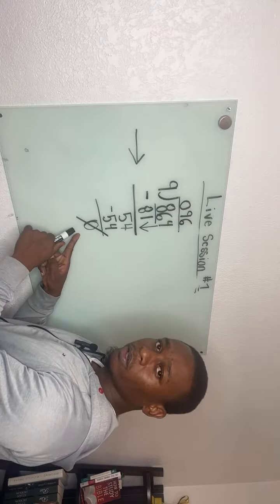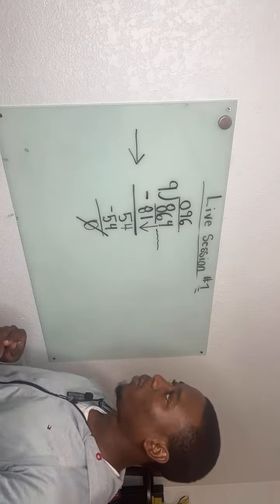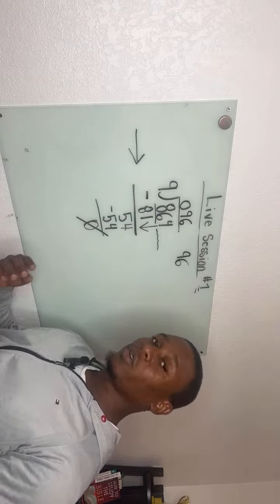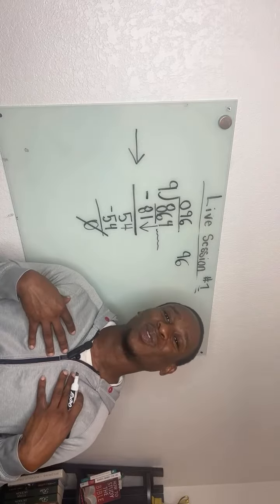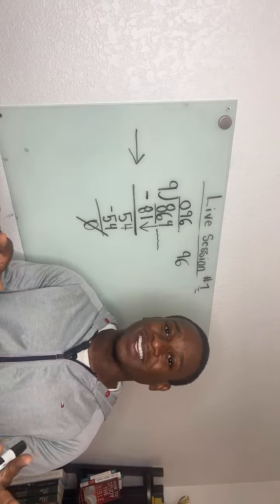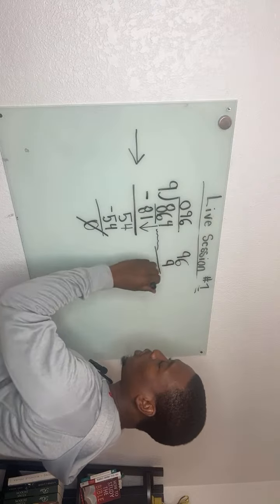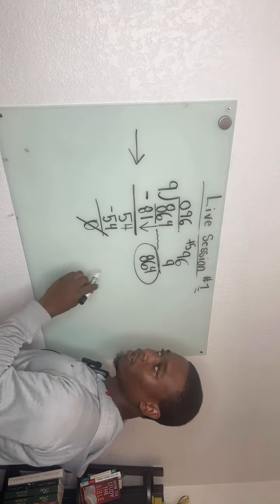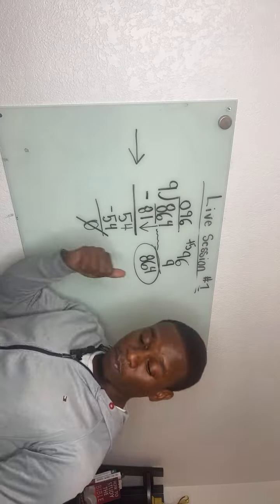There's no remainder and no more digits to bring down, so our answer is 96. If you doubt yourself and your teacher allows calculators, use them to double-check — mental math is great but for speed in a timed class, use your calculator. We multiply 96 times 9 and we get 864 as a product, confirming we have the right answer.